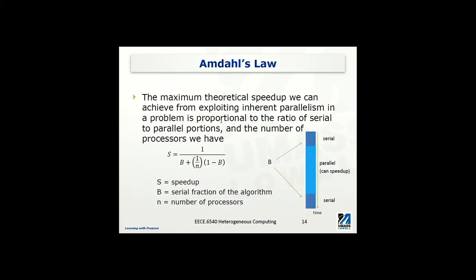Some of you have probably heard of Amdahl's Law. This is a very classical formula used to calculate the theoretical speedup when we try to exploit the inherent parallelism by running tasks on multiple processors or multiple processing units. The speedup is basically the original execution time — the serial execution time — divided by the execution time you could achieve if you run this task on multiple processing units in parallel.